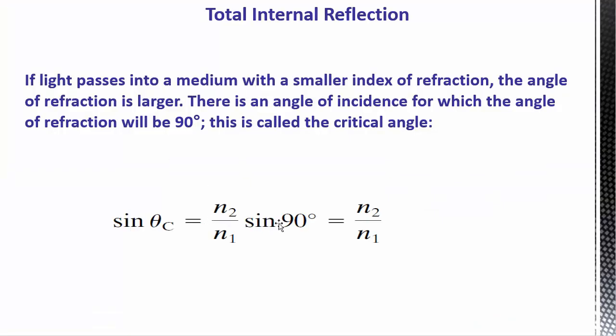So we wanted that transmitted angle to be 90 degrees, and so we plug in sine of 90 there. We just divided this N1 over here. This came from N1 sine theta 1 equals N2 sine theta 2. So we set theta 2 equal to 90, and then we called theta 1 theta c for the critical angle.